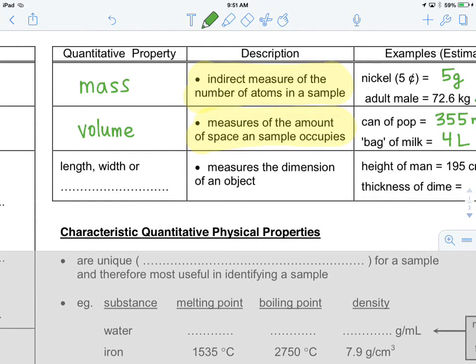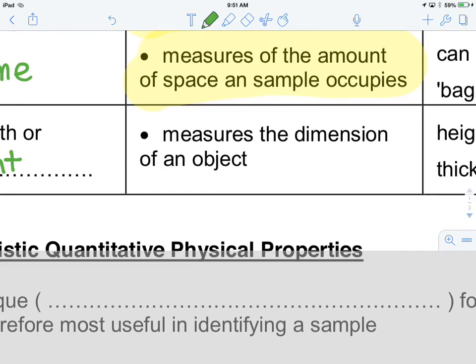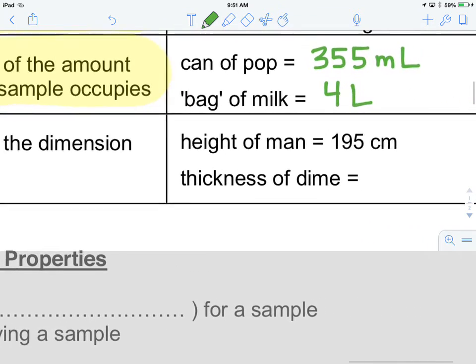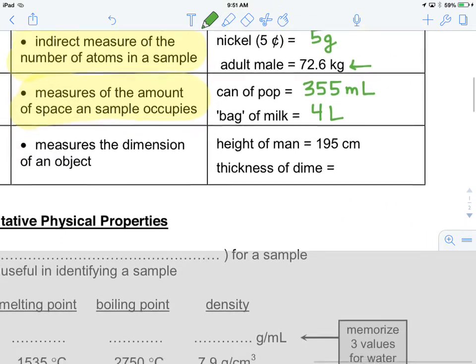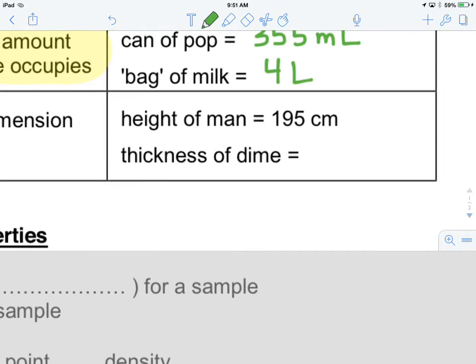Last, we have length, width, or height. And this measures the dimension of an object. And so, perhaps the height of a man, we might say, is 195 centimeters. And if we were going to estimate the thickness of a dime, we might say, well, a little bit bigger than one millimeter. We'd say maybe 1.2 millimeters.